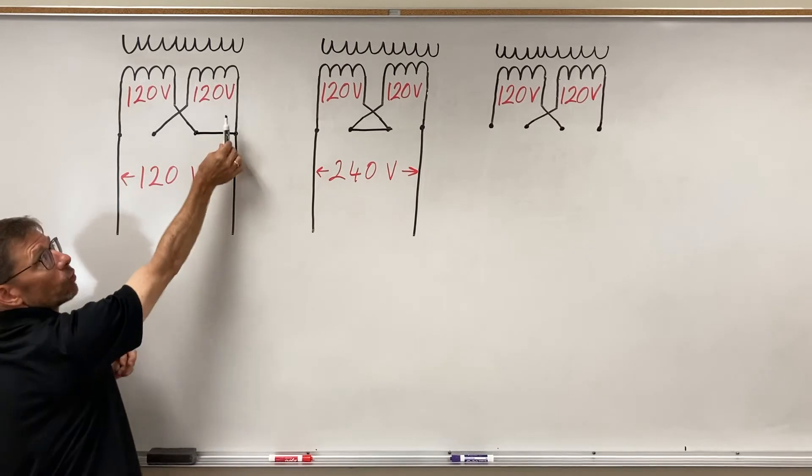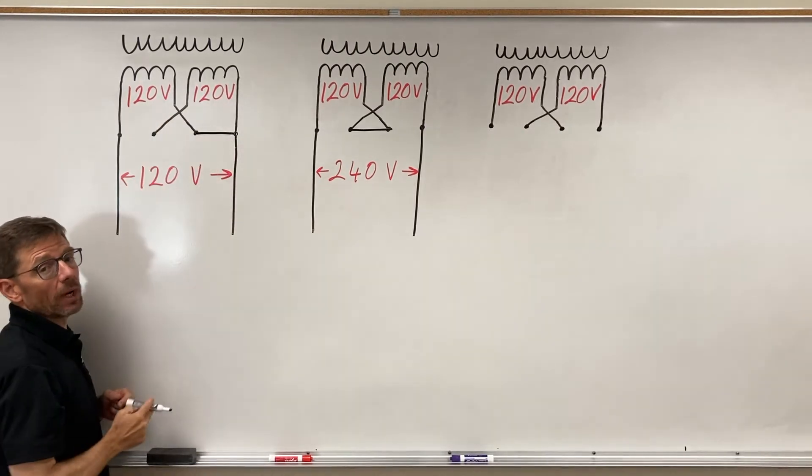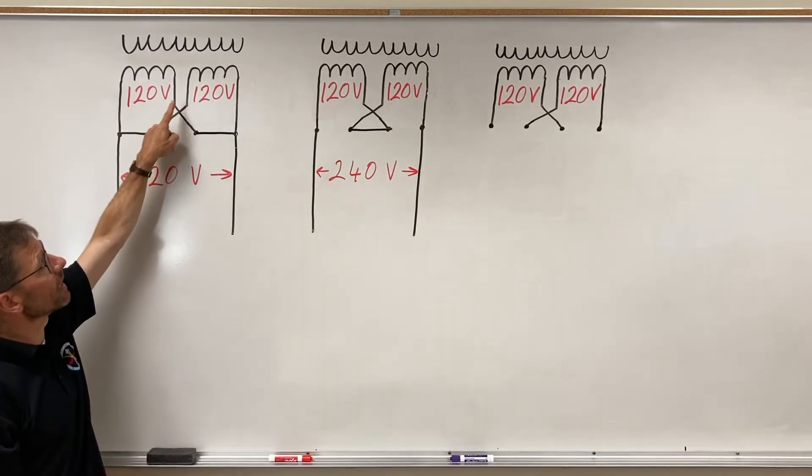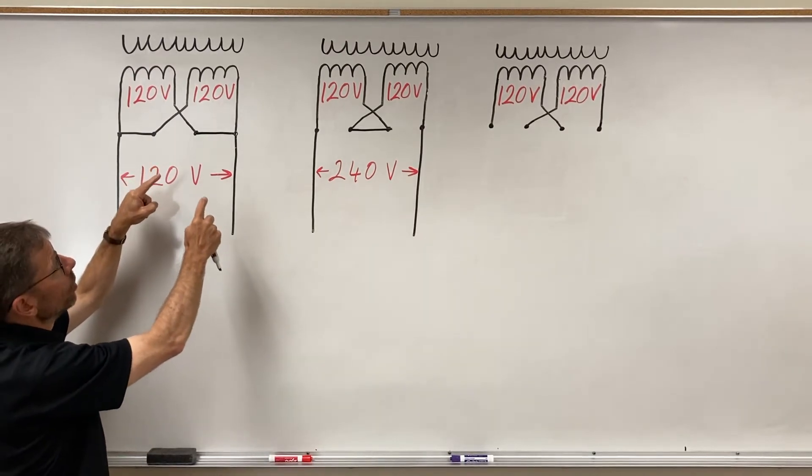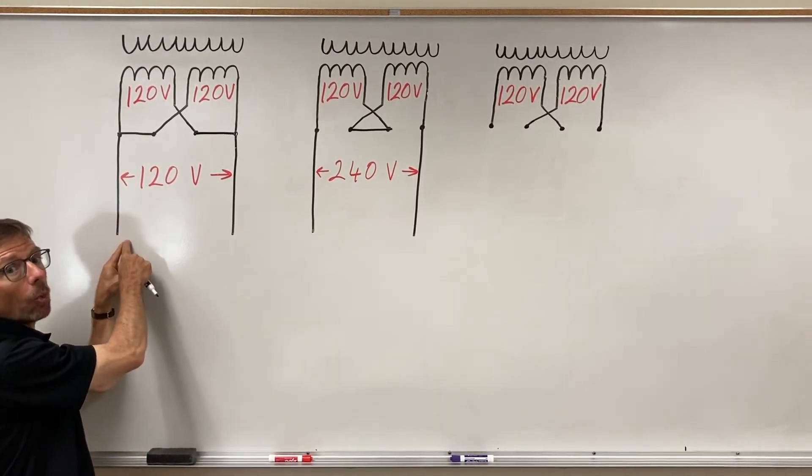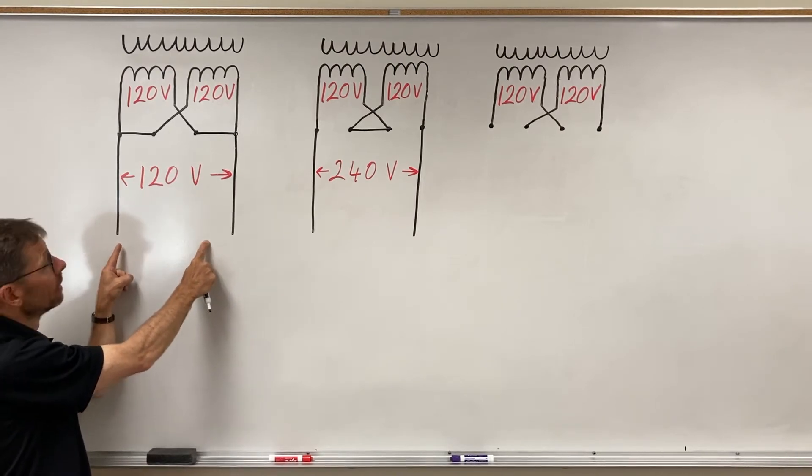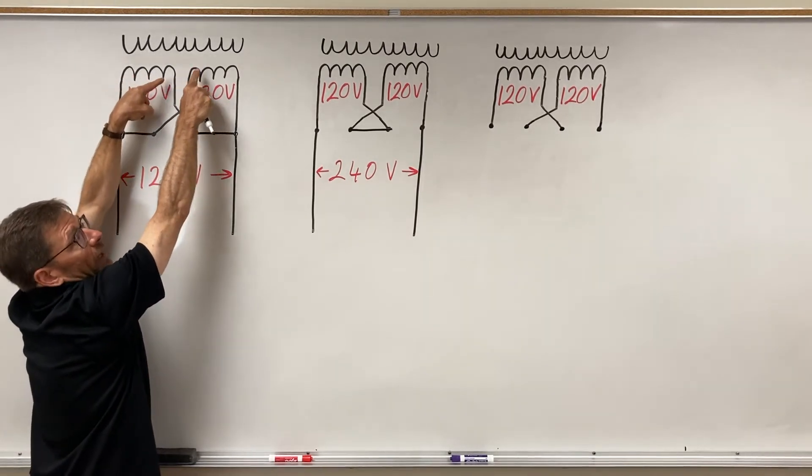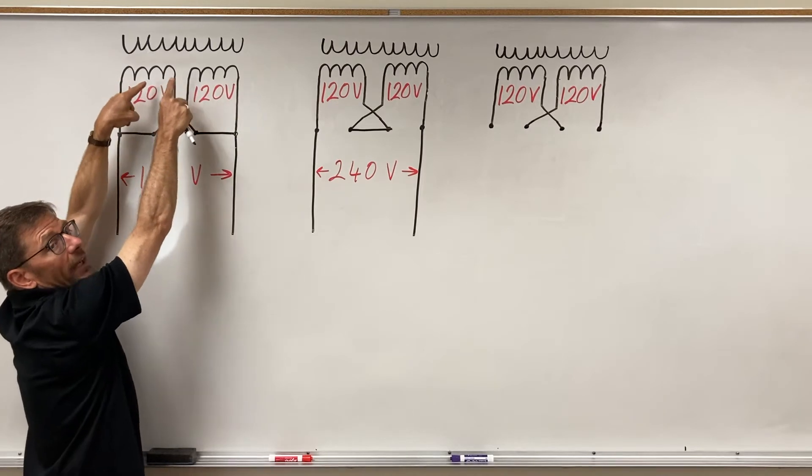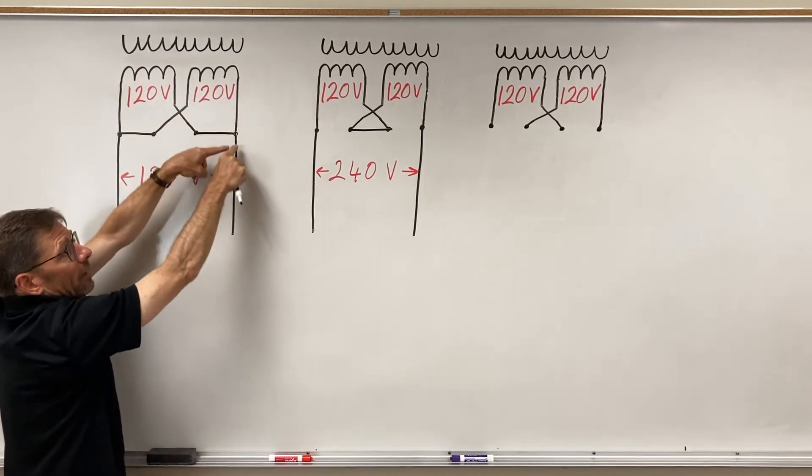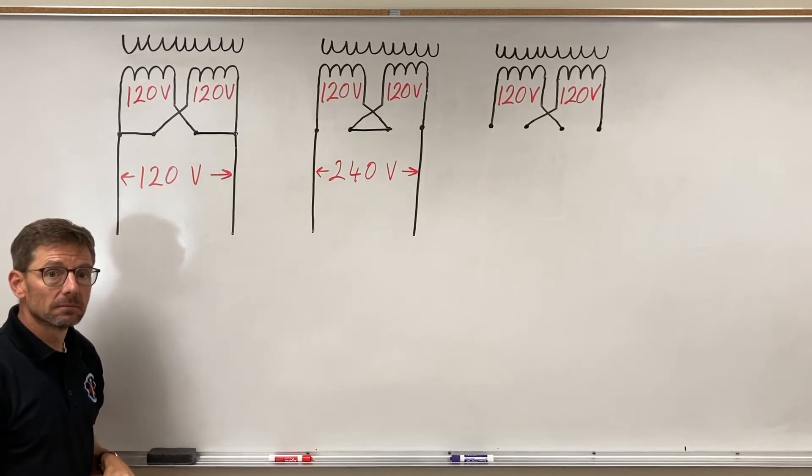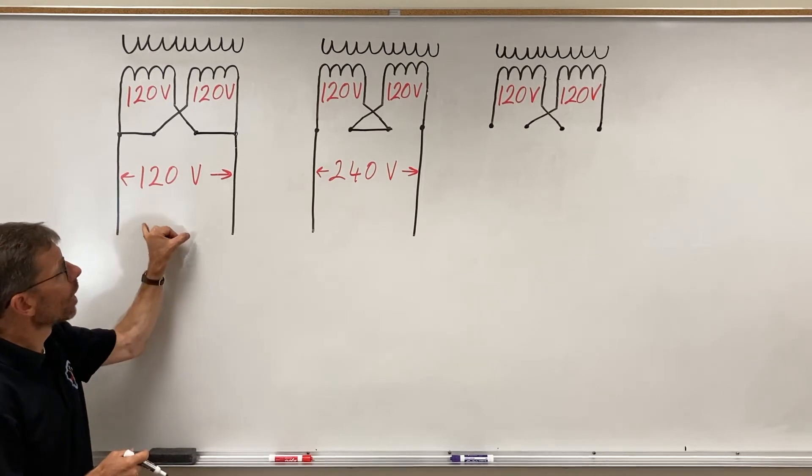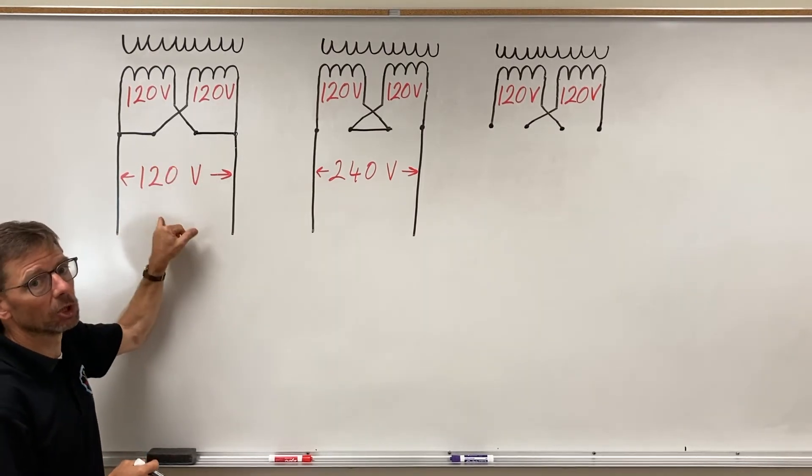That jumper connects the right side of this winding and the right side of this winding. And if I put the other jumper here, it connects the left side of this winding and the left side of this. So if I go from this line to see what is my voltage potential across here, I will go up here, splits off, develop 120 volts on each winding in parallel, and then come to this other line. 120 volts parallel, lower voltage option.